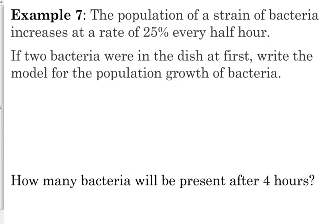Okay, simple, right? All right, let's look at one more problem. So, they give you some words and we've got to come up with the model for it. The population of a strain of bacteria increases at a rate of 25% every half hour. Okay, so anytime you see a rate, you need to go ahead and convert that to its decimal form. Move the decimal place two places to the left, so that's 0.25. If two bacteria were in the dish at first, that is our initial value. Two is our initial value.